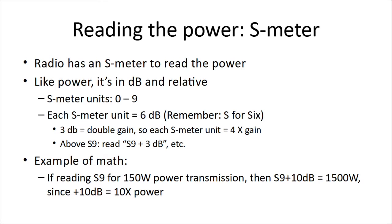Reading the power level. That's the S meter, the signal meter. Your radio has an S meter to read the power. And like the power, it's in dB, so it's relative. And the S meter goes 1 to 9, 0 to 9 and above. It's kind of weird, but it's traditional stuff. So, each S meter unit is 6 dB. Remember, S for 6. One unit on the S meter is 6 dB. And remember, 3 dB is doubling the gain. So, if you're going 3 dB and 3 dB again for 6 dB for each unit, it means for each S meter unit, you're getting 4 times gain.